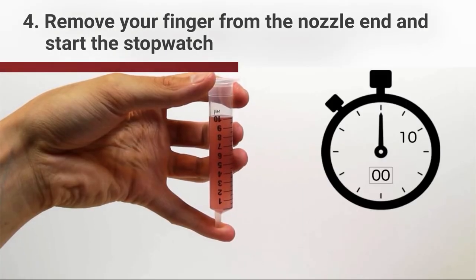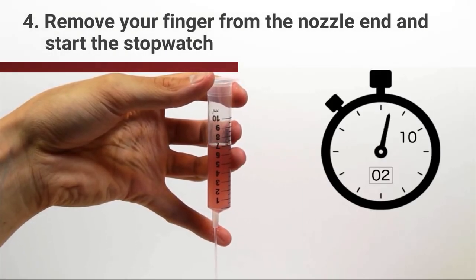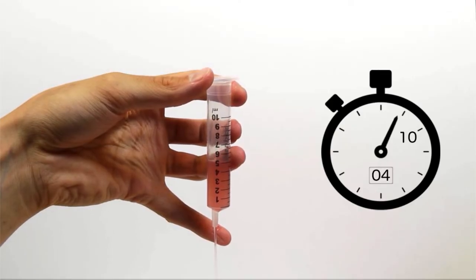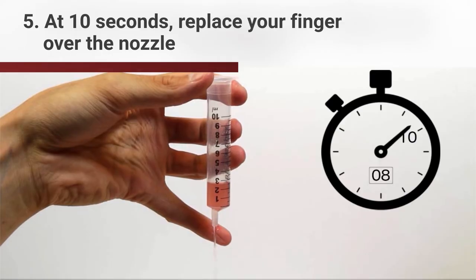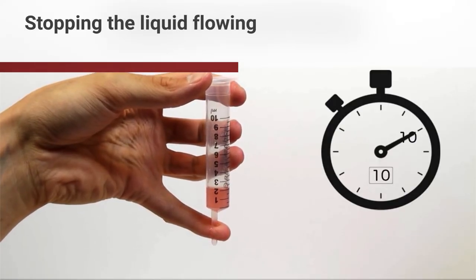Remove your finger from the nozzle end at the same time as starting the stopwatch. At 10 seconds, replace your finger over the nozzle, stopping the liquid flowing.